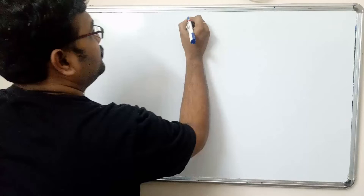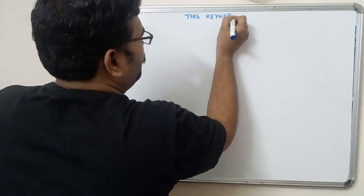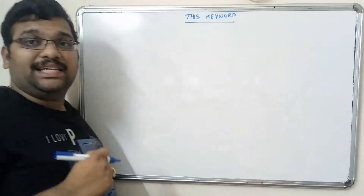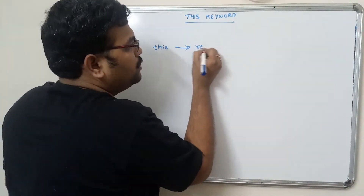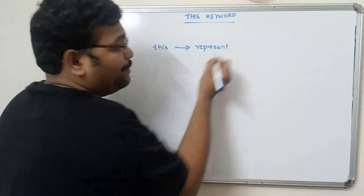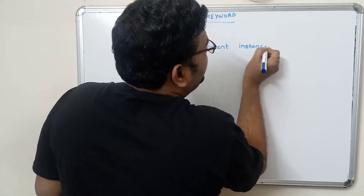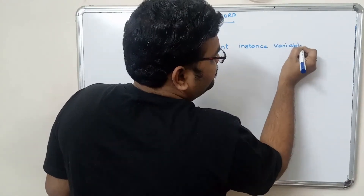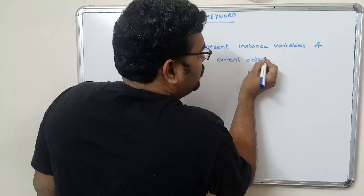Hi friends, welcome to our session. In this session, let us have a look at the importance of the 'this' keyword. This keyword is used to represent the instance variables of the current object.